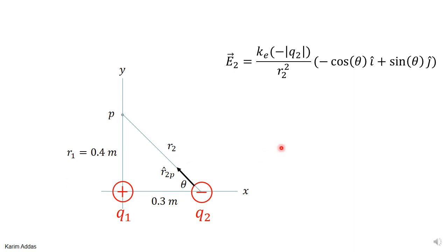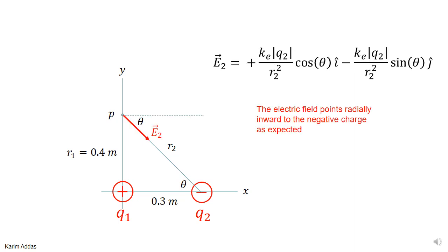When you substitute the charge with its sign and the unit vector, the x component of the electric field is positive because you have minus times minus, and the y component is negative because you have minus times plus. This is exactly what you'd predict — the field has a positive x component and a negative y component, pointing radially inward toward the negative charge, as expected. The direction comes out automatically from the formula.